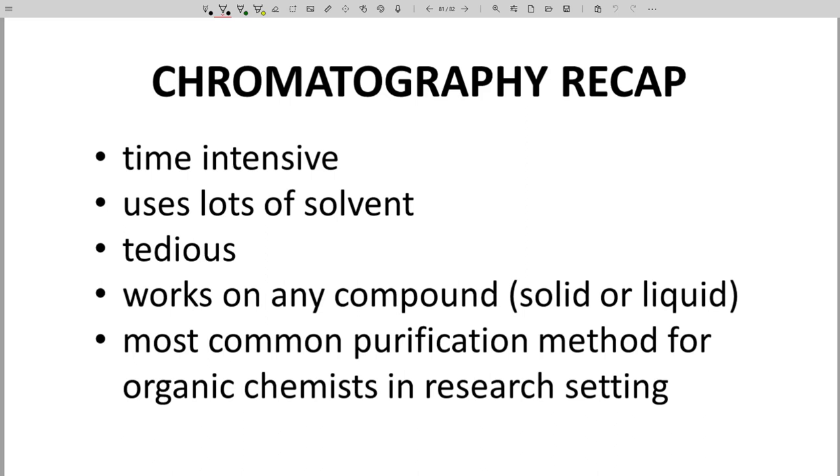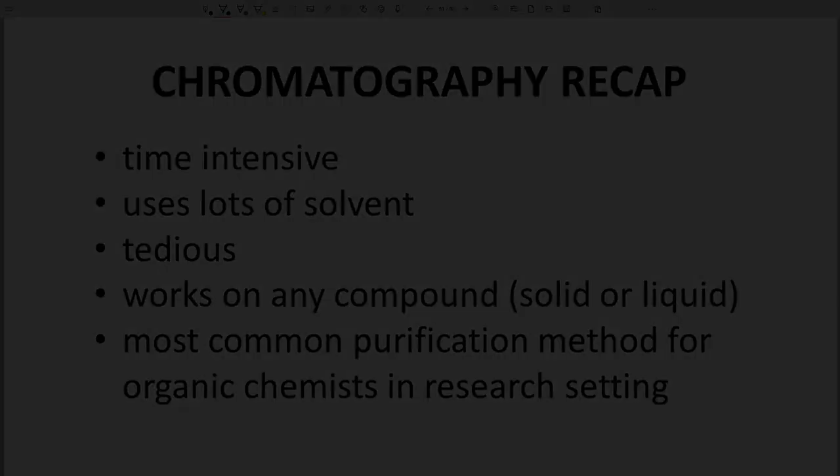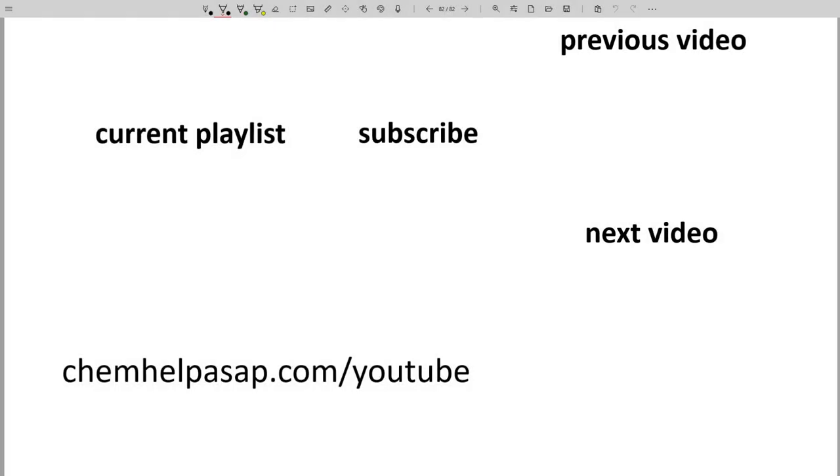You can purify solids and liquids. The process does require identification of a workable stationary phase, often silica gel, and a mobile phase, some non-polar organic solvent. Chromatography does not scale well. You can do it on larger amounts of material, but the amount of solvent and silica gel, both of which are expensive, can make it cost prohibitive. I hope this video helped you understand the ideas and techniques behind column chromatography.